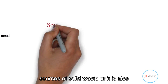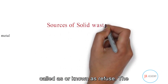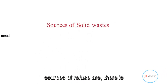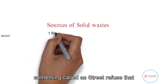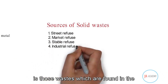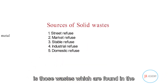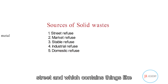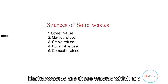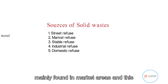Now let's see what are the sources of solid waste, also known as refuse. One source is street refuse - waste found in the street which contains things like leaves, straw, paper, and animal droppings.